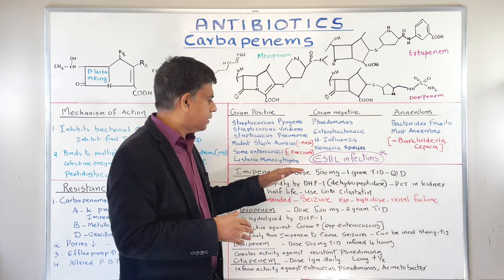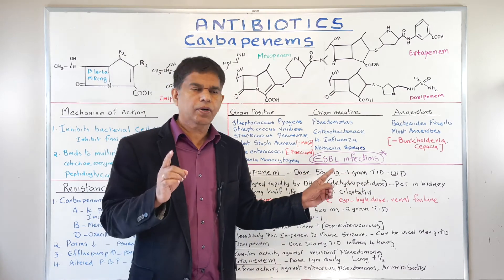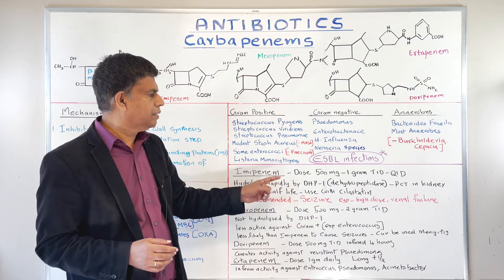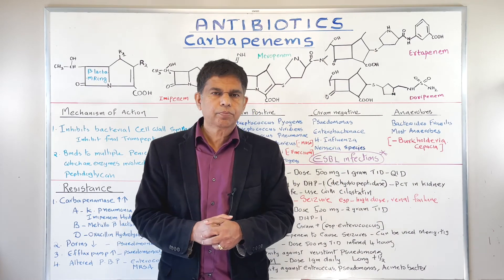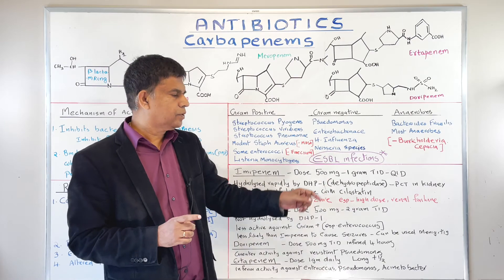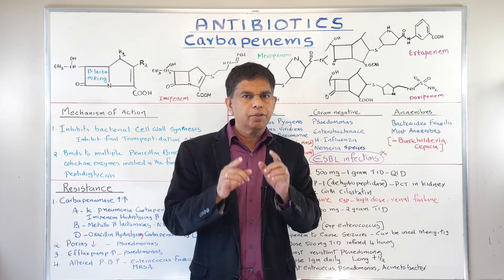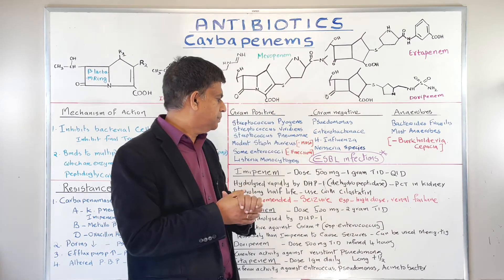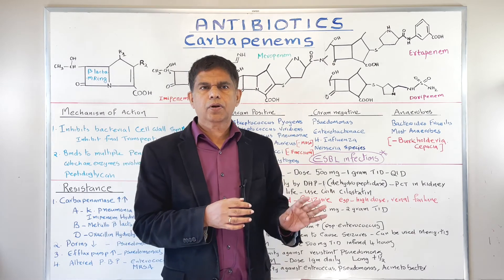The first drug is imipenem, dosed at 500 mg to 1 gram TID or QID. Remember, it is rapidly hydrolyzed by DHP-1 — dehydropeptidase-1 — in the proximal convoluted tubule of the kidney. To prevent this, we combine it with cilastatin, which inhibits the dihydropeptidase enzyme. So when you give imipenem, always use cilastatin. This is a board exam point. Imipenem is always combined with cilastatin to prevent DHP-1 hydrolysis.